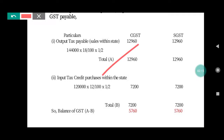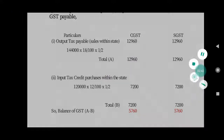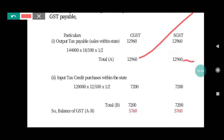Purchases are 1,20,000. The purchase amount 1,20,000 × 12% is divided at 6% each — so 6% CGST = 7,200 and 6% SGST = 7,200. That's how we calculate the input tax credit figures simply.